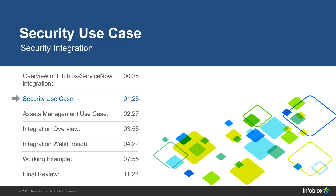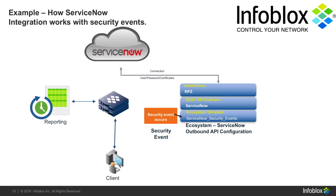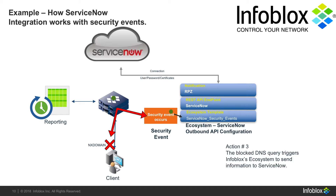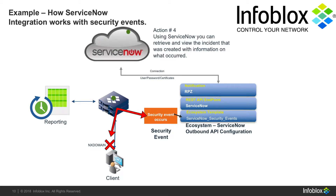Let's look at the first use case. A client sends a DNS request through the Infoblox grid. Next, the DNS request is blocked by Infoblox. Infoblox ecosystem templates are then triggered, sending information about the security event to ServiceNow. Finally, using ServiceNow, you can see the security event that just occurred with relevant information on the incident report.